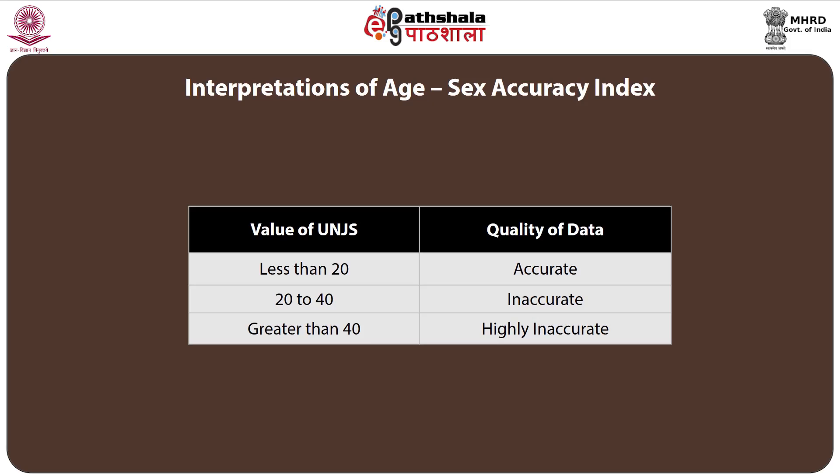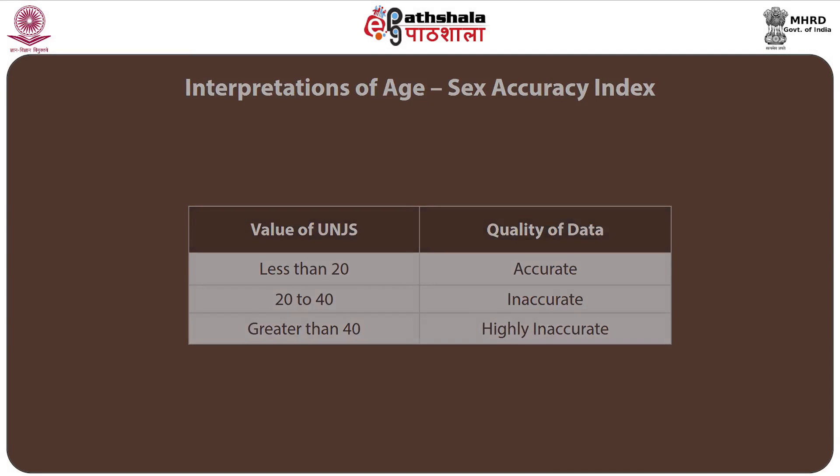To interpret this score for India based on the 2011 census: if the score is less than 20, the data is considered very accurate; if the score is between 20 and 40, the data is slightly inaccurate; if the score is greater than 40, the data is highly inaccurate. The score of 23.89 for India's 2011 census indicates mild inaccuracy — it is not below 20 for full accuracy, but it is close to 20, showing only mild inaccuracy.